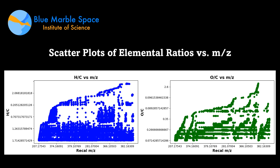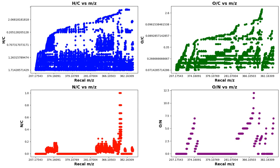These scatter plots were specifically plotted against the Mz — the mass to charge ratio — again. The ratios plotted were the hydrogen to carbon, the oxygen to carbon, the nitrogen to carbon, and the oxygen to nitrogen — all four combinations compiled together in one visual and plotted against the mass to charge ratio.